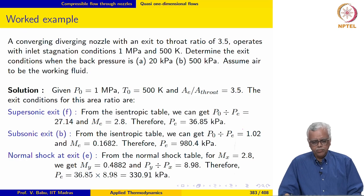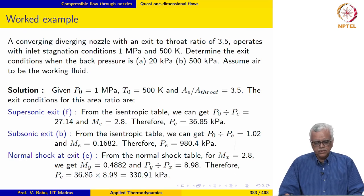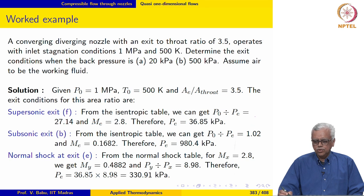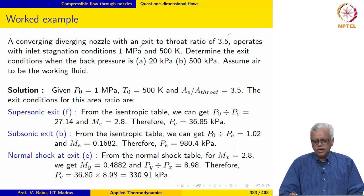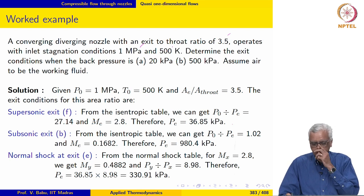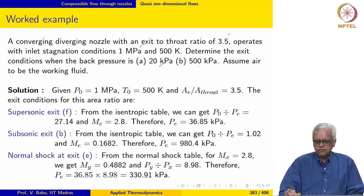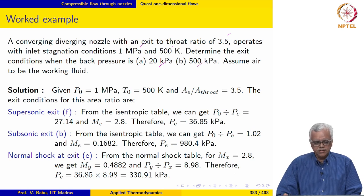Let us work out an example involving the concepts discussed in the previous class. A converging-diverging nozzle with an exit-to-throat area ratio of 3.5 operates with inlet stagnation conditions of 1 mega Pascal and 500 Kelvin. Determine the exit conditions when the back pressure is (A) 20 kilo Pascal and (B) 500 kilo Pascal. Assume air to be the working fluid.